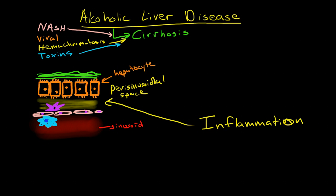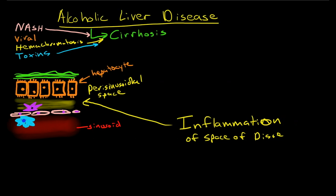So, the inflammation in all of these diseases is occurring in the space of Disse. Now, I want to begin our discussion of alcoholic liver disease to talk a little bit about how that inflammation starts.